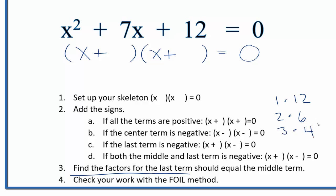We can see that 3 times 4, so if we added 3 and 4 together, that would give us 7. So we'll put a 3 here and a 4 here, and this should be factored. But we can check our work using the FOIL method.